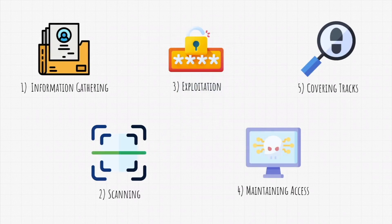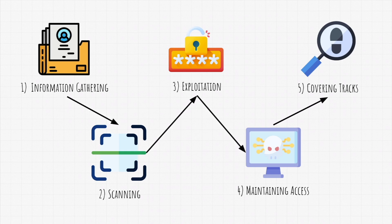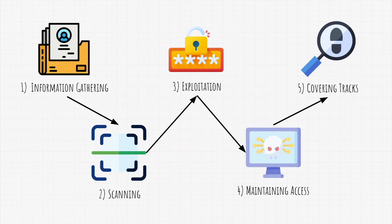These five steps are the entire process of a penetration test, and we are going to cover them in great detail throughout the course. Keep in mind that these steps should be performed in order. One more important thing: if you are a beginner, you might think that the third step — exploitation or gaining access — is the most important step. Even though it is very important, the most important steps are actually information gathering and scanning. It is in these two steps that we discover vulnerabilities, and if you are not good at gathering information, you might miss things that could be used to gain access, preventing you from finding an actual vulnerability. Information gathering is 70% of the work.